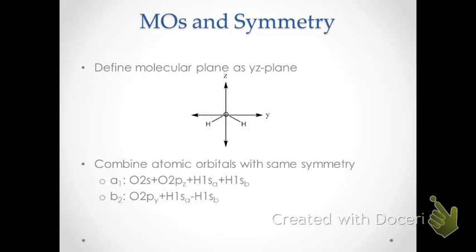There is also B2 symmetry, which corresponds to the 2py orbital — the orbital oriented along the Y axis — combined with the H1sa and H1sb orbitals. In this case we take the difference between the two hydrogen 1s orbitals, and these orbitals are anti-symmetric with respect to rotation about the z-axis.